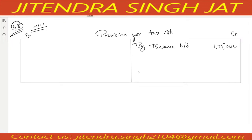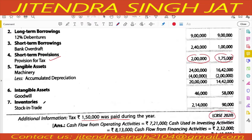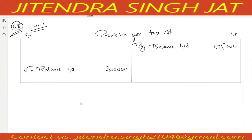The closing balance will come on the debit side as 'To Balance Carried Down' — 2 lakh rupees. From the adjustment, tax paid during the year is 1,50,000, which comes on the debit side as 'To Bank Account' — 1,50,000. The balance remaining on the credit side is 3,50,000.